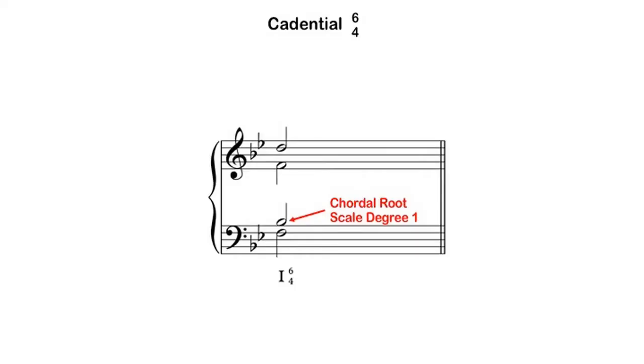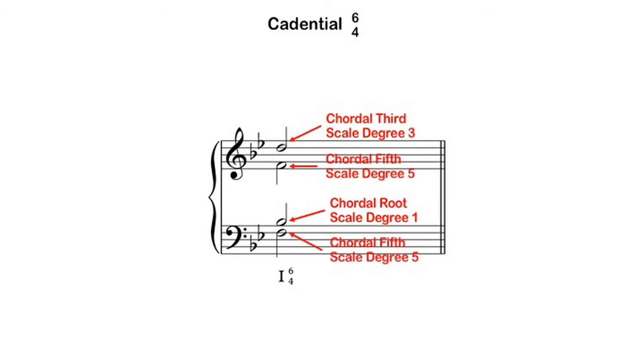Like all six-four chords, cadential six-fours have to be handled in very specific and formulaic ways. A typical six-four chord is made up of the pitches of the tonic triad — scale degree one, scale degree three, and scale degree five. Scale degree five, in order to put the chord in second inversion, needs to be in the bass. If you're dealing with four voices, as with all six-four chords, we double the bass pitch, or the fifth of the chord. Cadential six-four chords are extensions of a dominant sound, so when we hear them, we're expecting a dominant chord that we will eventually resolve to.